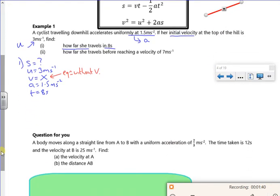So I'm going to write down the equation that I'm using. So S equals 3 lots of 8 plus a half times 1.5 times 8 squared. If you put that in your calculator exactly how you see it, it gives me 72 metres.